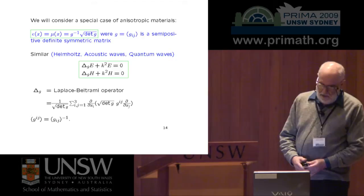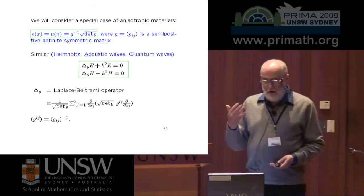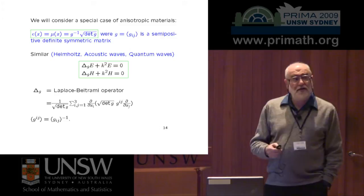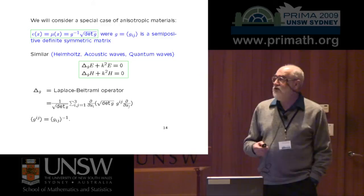We want to show that if the Maxwell equations are solved in this domain describing electromagnetic propagation, the boundary information you get at the boundary of omega is the same as in the homogeneous case — vacuum or empty space — where epsilon and mu, the electric permittivity and the magnetic permeability, are the identity matrices. The boundary measurement has to be exactly the same, from every possible angle and every possible direction.